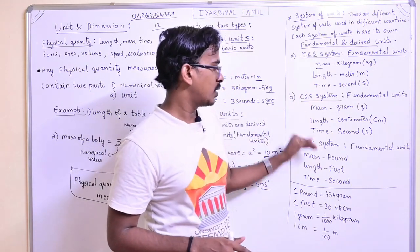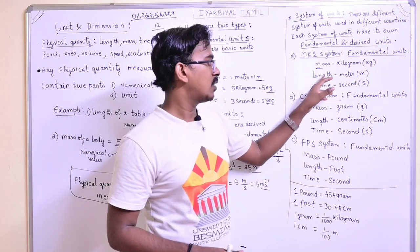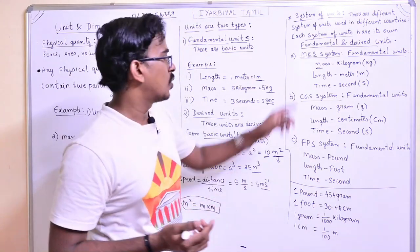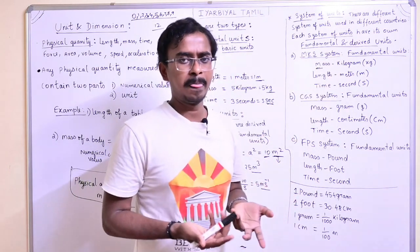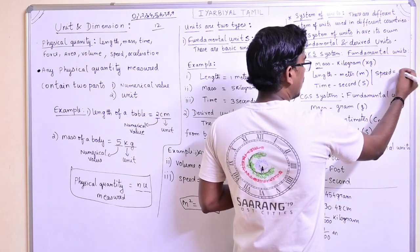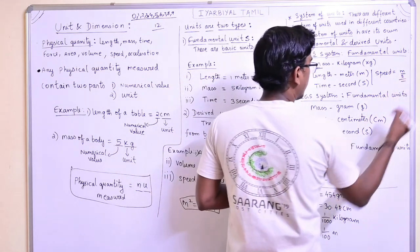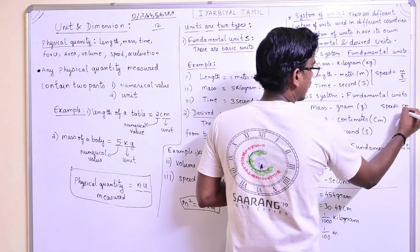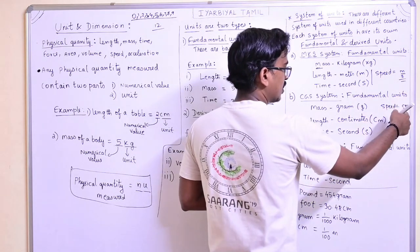So, in different systems, mass is kilogram, gram, or pound; length is meter, centimeter, or foot. Now, for derived units: speed is distance by time. In the MKS system, speed is meter per second. In the CGS system, since length is centimeter and time is second, speed is centimeter per second. The fundamental unit here is centimeter.